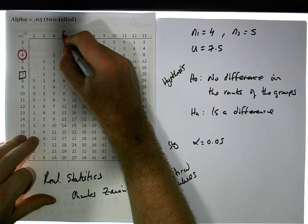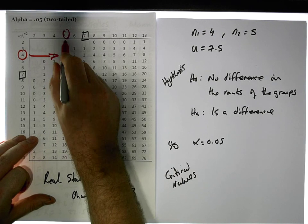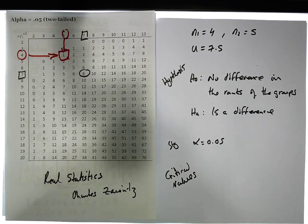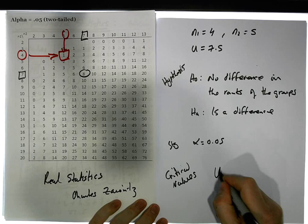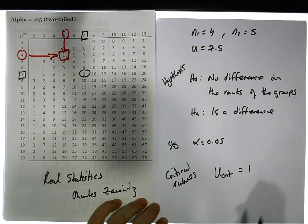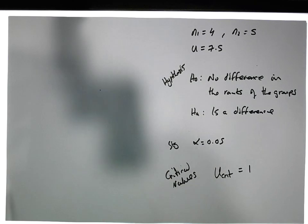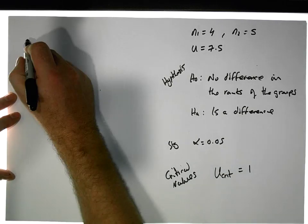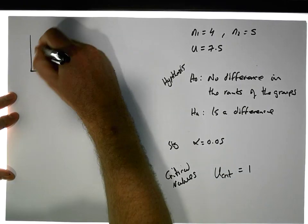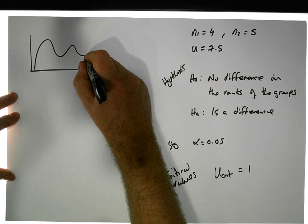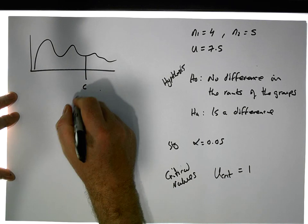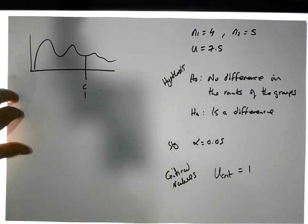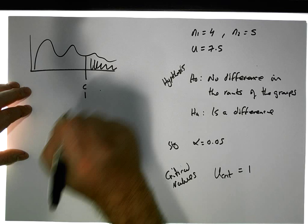The first sample size is 4, the second sample size is 5. The critical value associated with that is 1. So our U critical is equal to 1. Now what we need to do is compare our test statistic to this critical value.